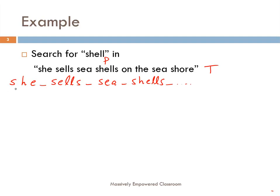How do we begin? We begin by writing the pattern here, and we find that this part matches the first three characters of the given text. But that is a partial match. When we come to the fourth position, we find that it does not match. The first part of the text does not match the given pattern 'shell' — only the first three characters match; the remaining two characters L and L do not match the whitespace and S.